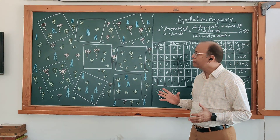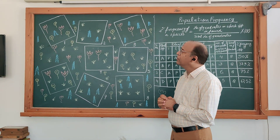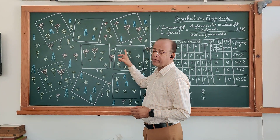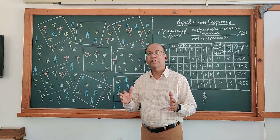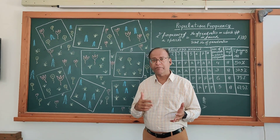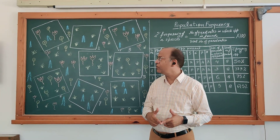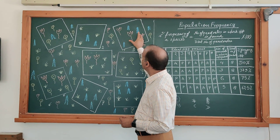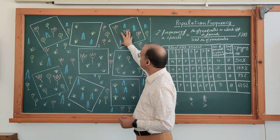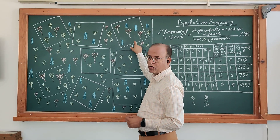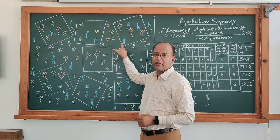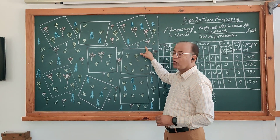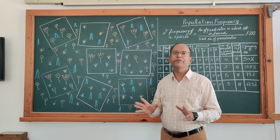Here we have to take a precaution: when we are observing whether a species is present or absent in a quadrant, we should consider that it should be totally inside the quadrant. If any species is on the line of the quadrant, then leave that — do not count it.